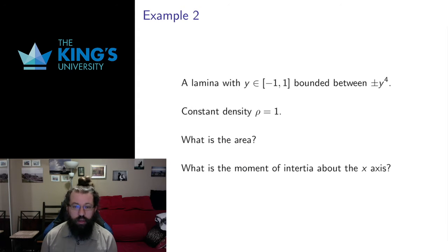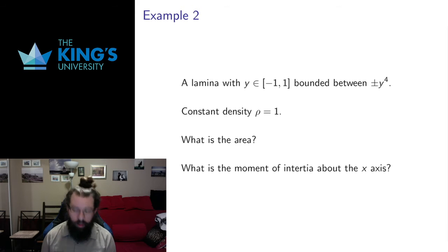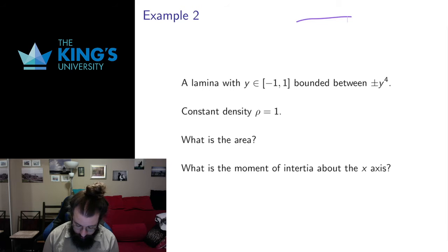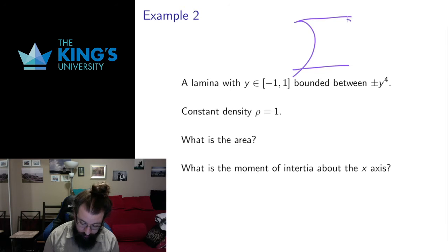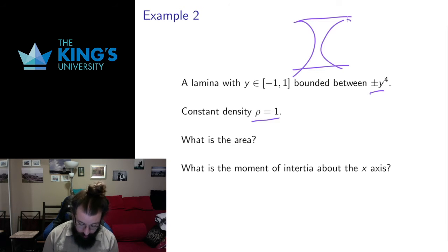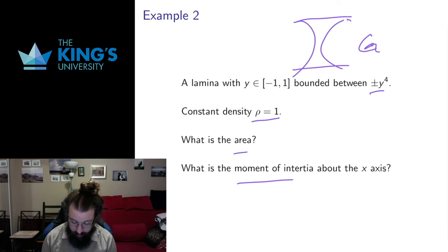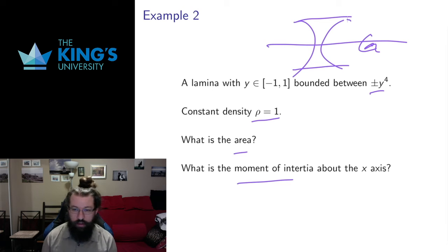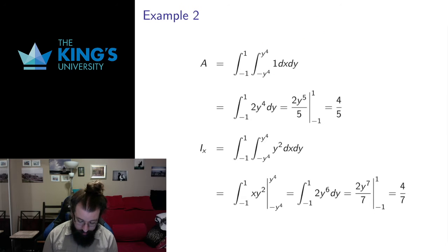Now I want to consider another lamina — a shape bounded between negative 1 and 1 that looks roughly like plus or minus y to the 4. These are quartic shapes, so the lamina has this kind of shape. It has constant density. I want to calculate the area and the moment of inertia around the x-axis: how difficult is it to spin this thing around the x-axis?